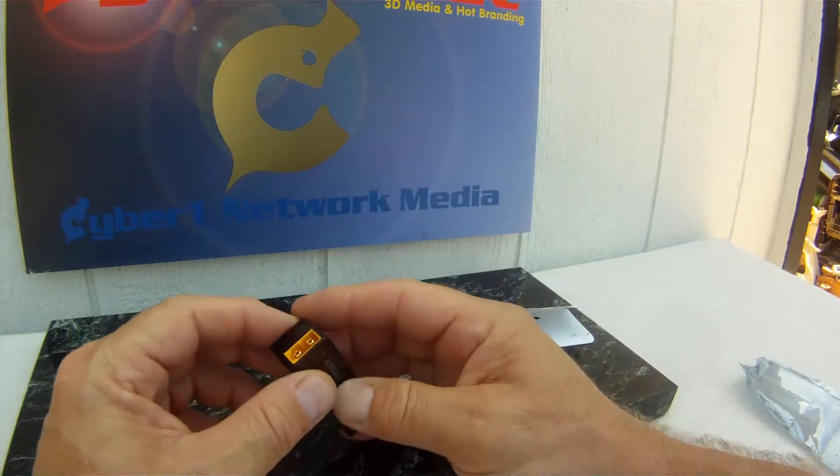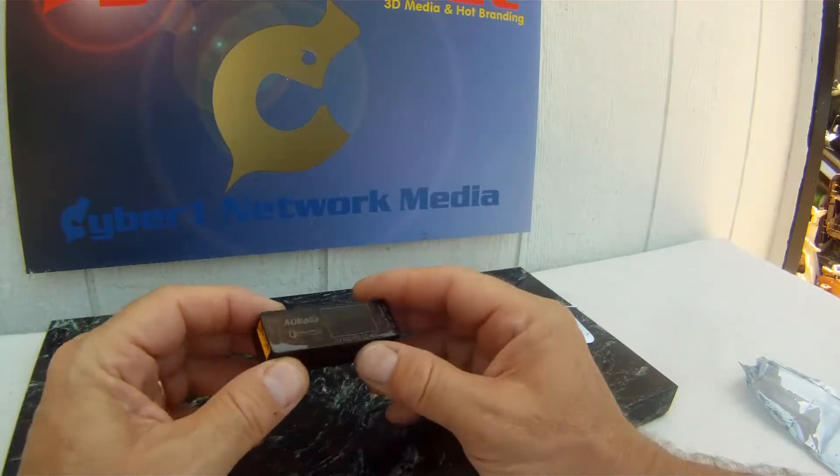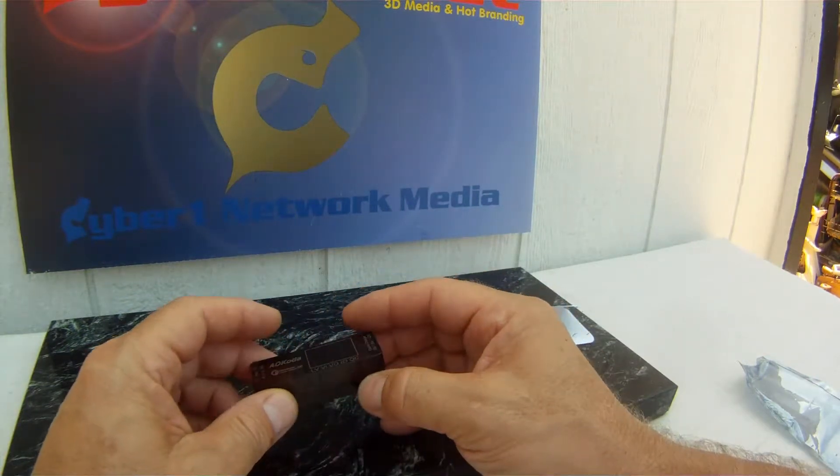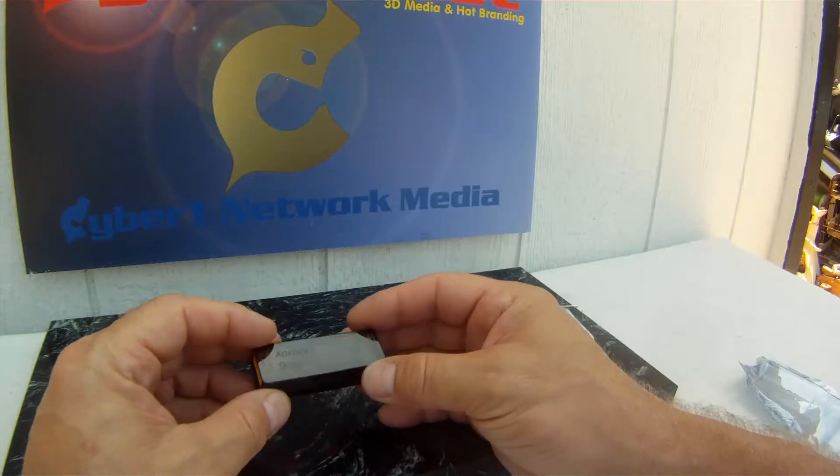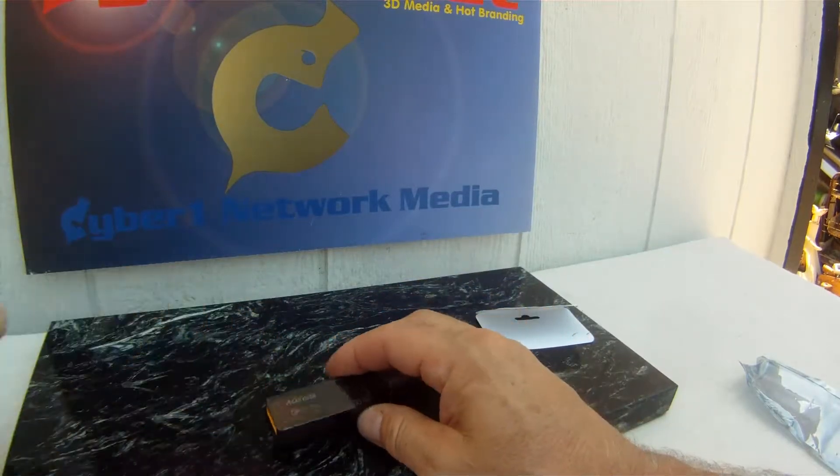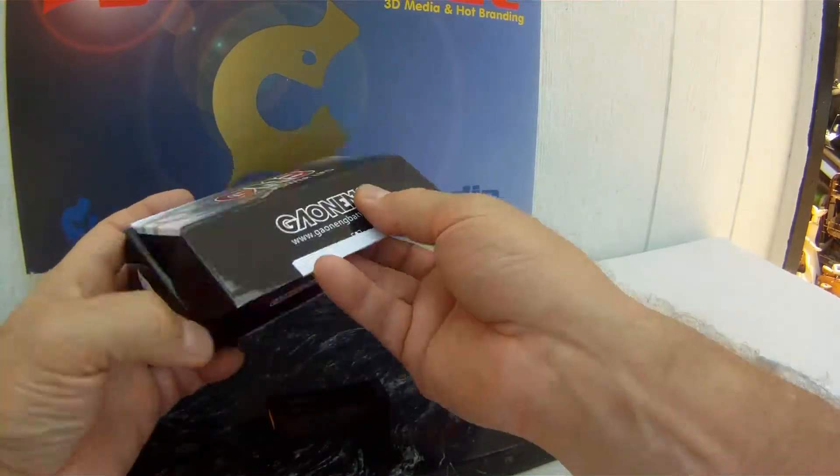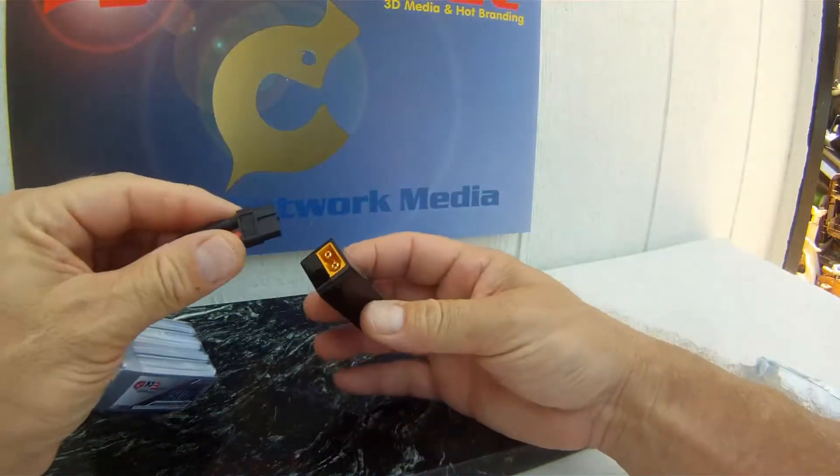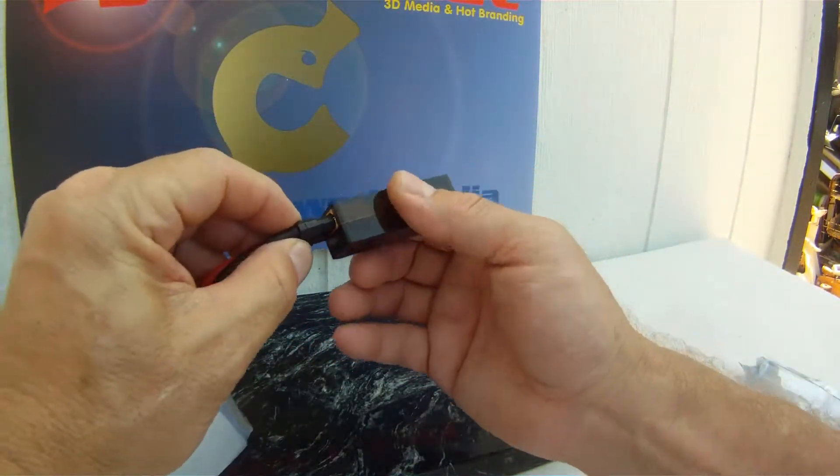You can see here it's got the XT60 connector for the battery in and USB 5V out so that you can charge your typical devices. I'll give you an example here. Here's a 1500 milliamp 4S battery. It's got the XT60 connector on it.